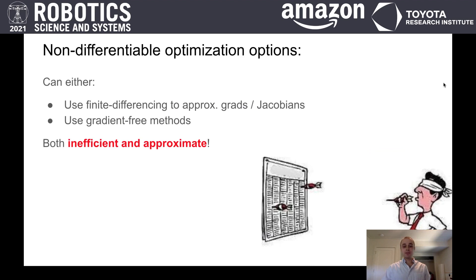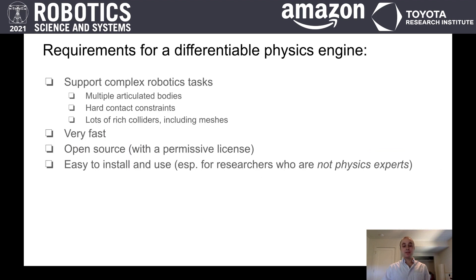To provide faster and more accurate gradients, we'd like an analytically differentiable physics engine. Ideally though, we don't want to sacrifice anything that's great about existing non-differentiable physics engines. Specifically, we'd like to maintain support for complex robotics tasks, we'd like the engine to be very fast, open source, and easy to install and use — especially for researchers who are not physics engine experts.